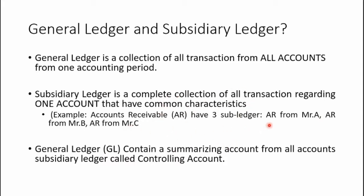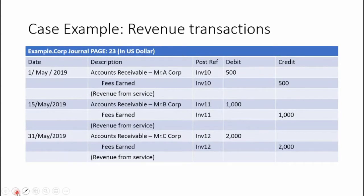These three subsidiary ledgers collect transactions that have common characteristics. So the subsidiary ledger for accounts receivable from Mr. A contains all transactions that include accounts receivable from Mr. A, and likewise for Mr. B and Mr. C. General ledger is like a compilation of all subsidiary ledgers. Subsidiary ledger helps the general ledger become more detailed, and the general ledger contains a summarized account from all subsidiary ledgers, which is called a controlling account.